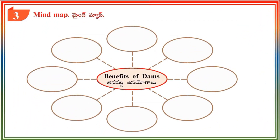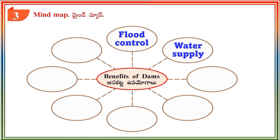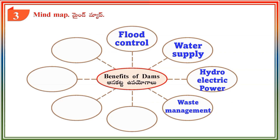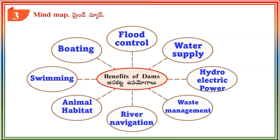Section 3 — Mind Map: Benefits of dams. Flood control. Water supply. Hydro-electric power. Waste management. River navigation. Animal habitat. Swimming. Boating.